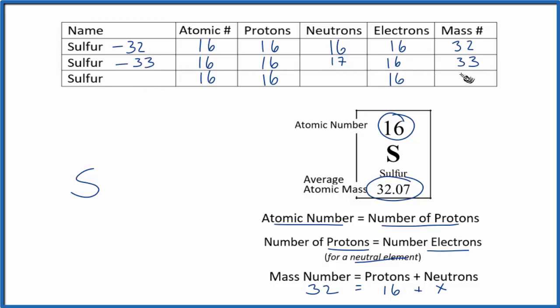We also have sulfur with 34, and actually about 4% of sulfur atoms are this isotope. And they have 16 plus something gives us 34. 16 plus 18. So about 4% is sulfur-34.